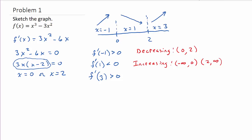Now let's find any local maximum or minimum values. It's easy to find these once we know where the function is increasing and decreasing. On the interval before zero it's increasing, and then at zero it starts to decrease — so at x equals zero we have a local maximum. Then it's decreasing, and at two it starts increasing again — so we have a local minimum at x equals 2.